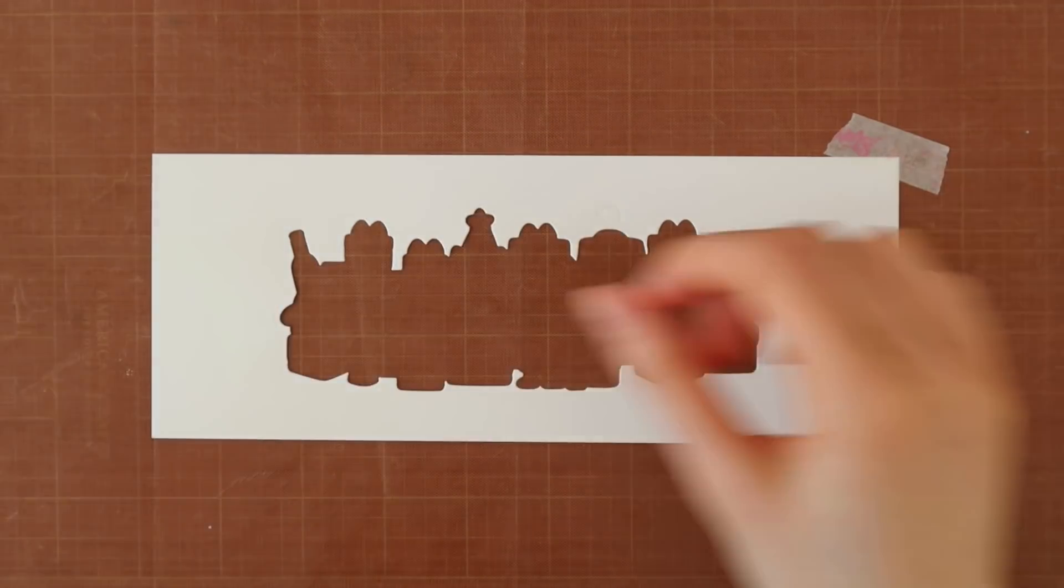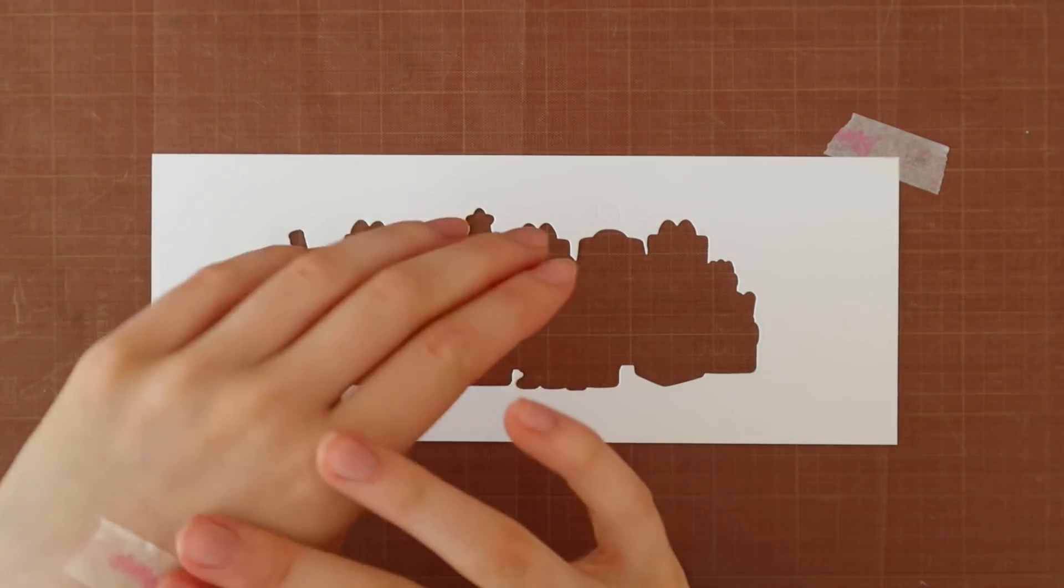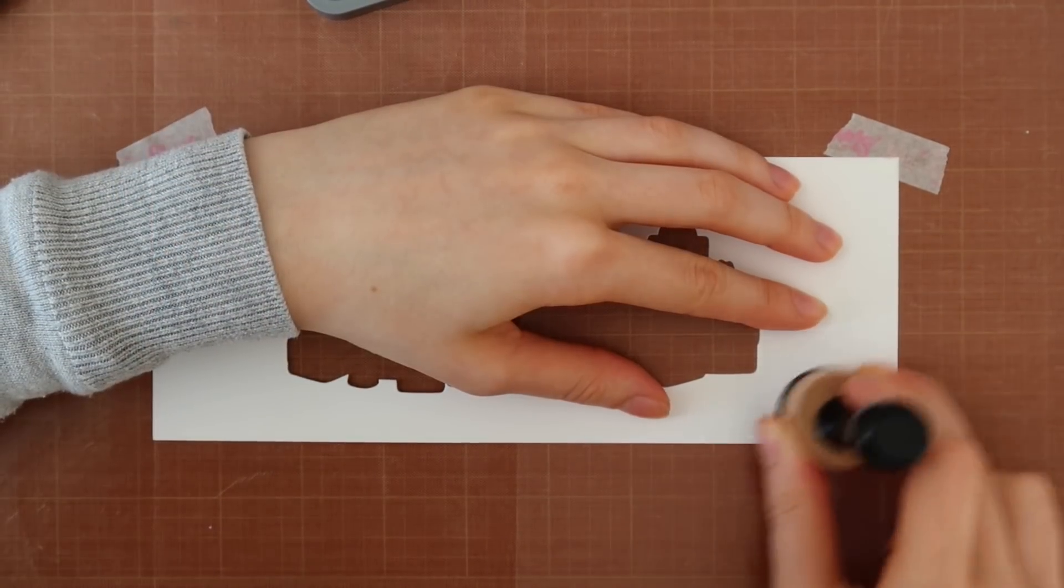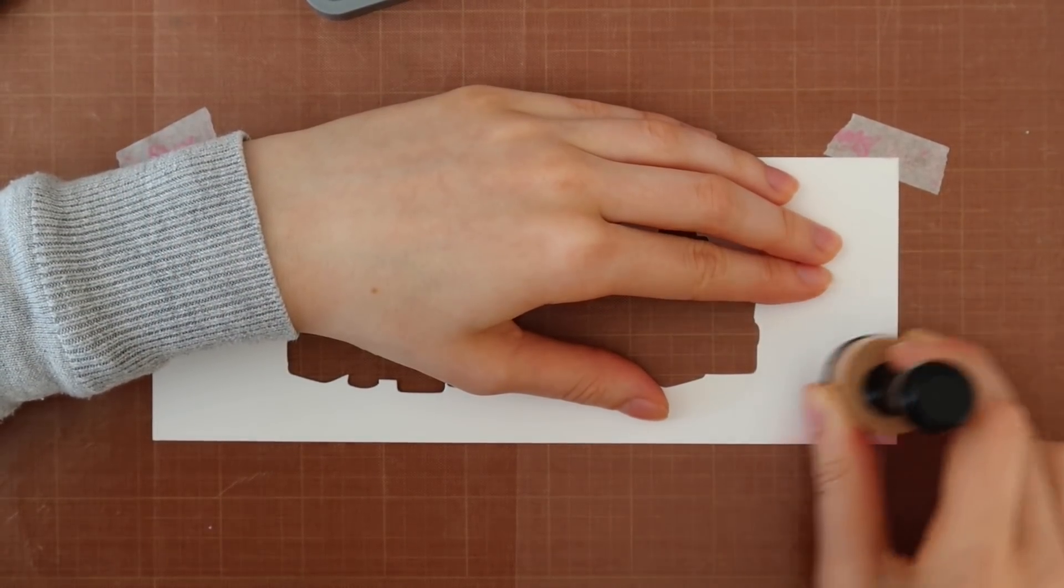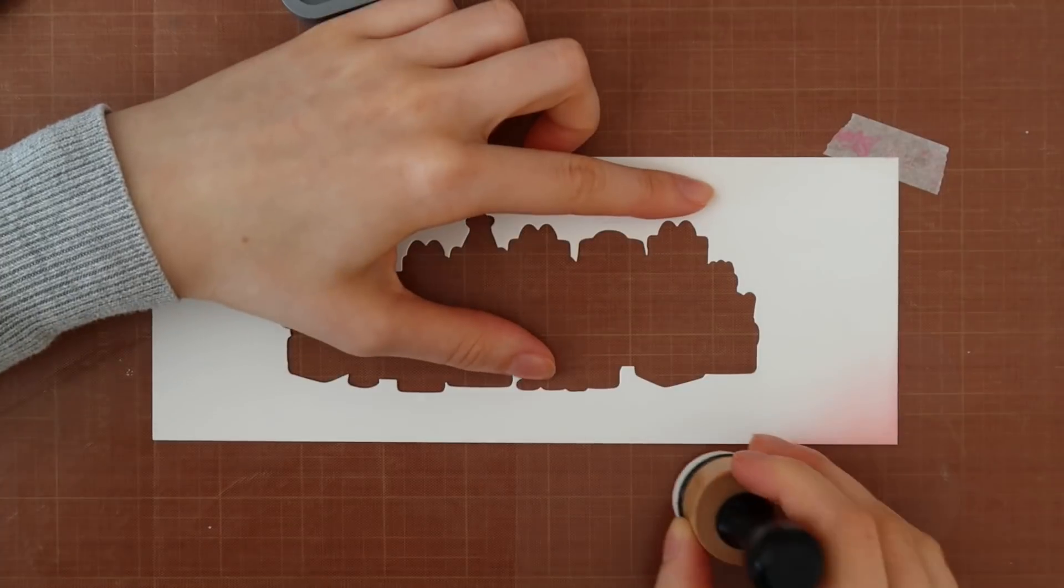So to create this window for my shaker card, I took a piece of white Neenah cardstock and I cut that to three and a half by nine. And then I just die cut the large design out of it to create my shaker window.